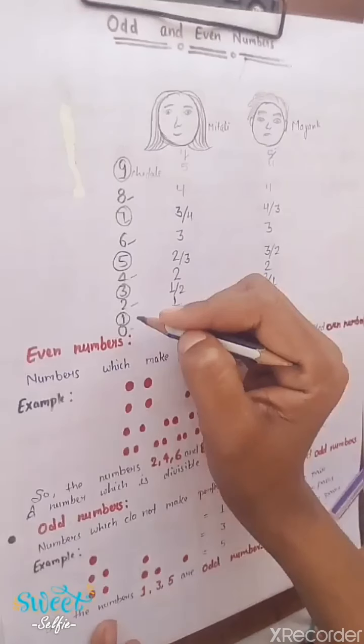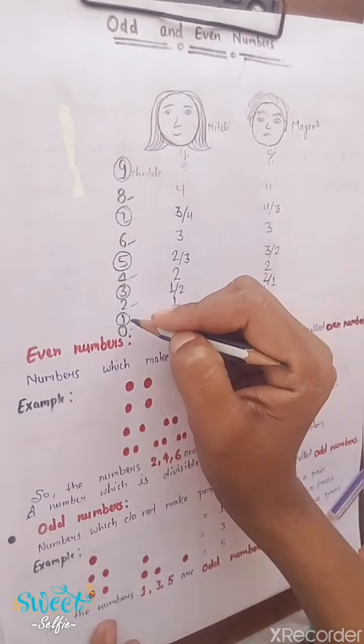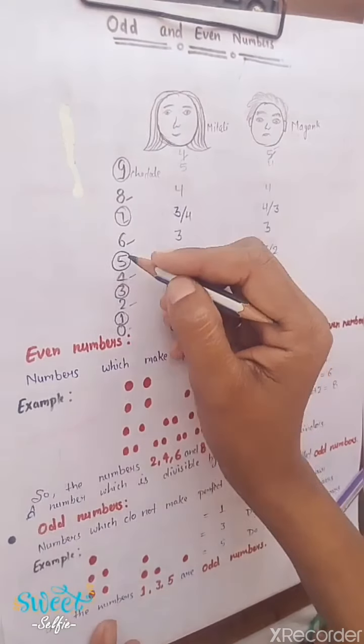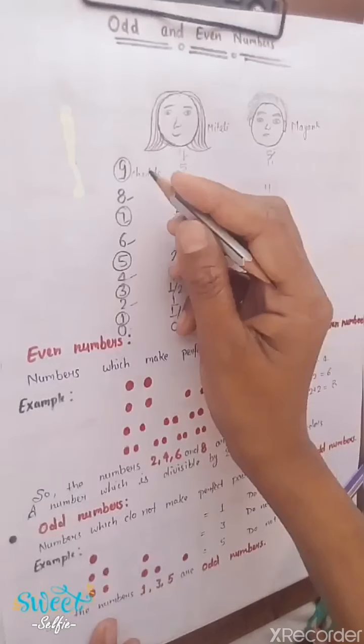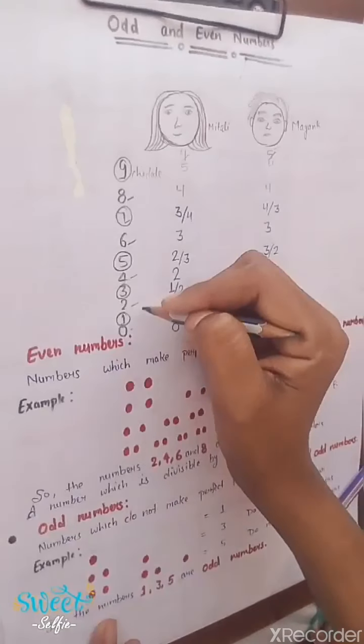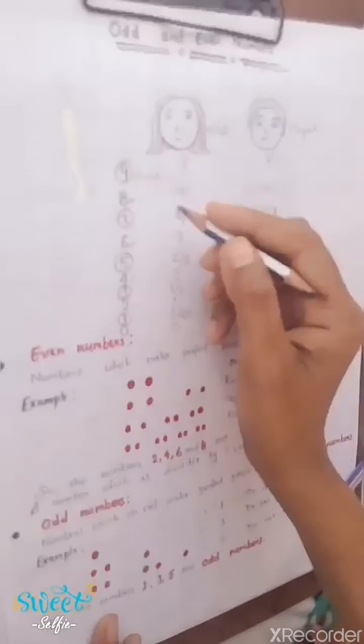Which are the rest of the numbers? One, three, five, seven, and nine. These numbers are odd numbers.